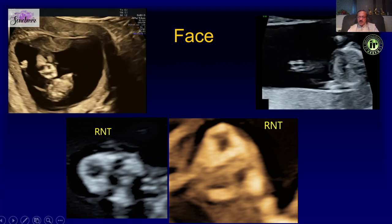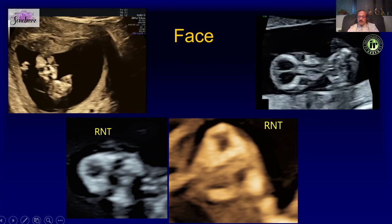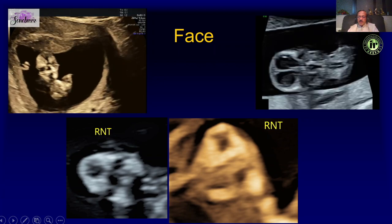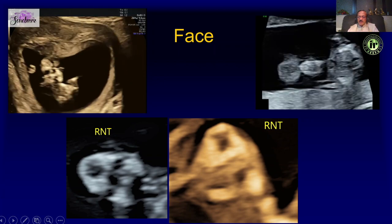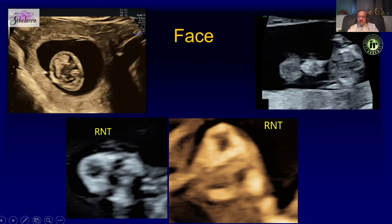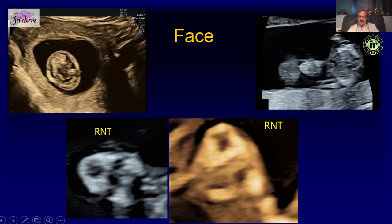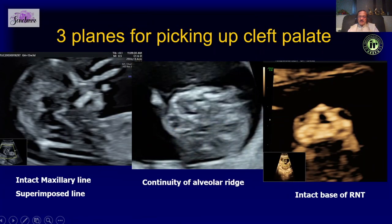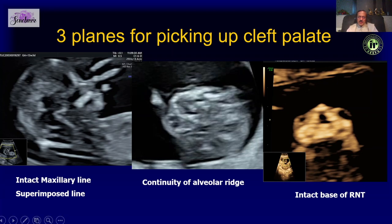Three planes can help us pick up cleft palate. The first is the basic NT scan sagittal view, where we look out for the interrupted maxillary line sign — making sure this line is not interrupted.